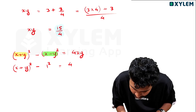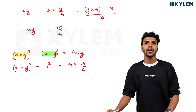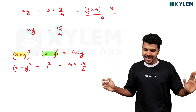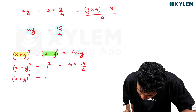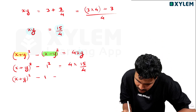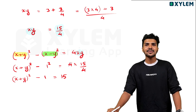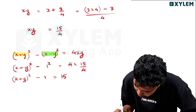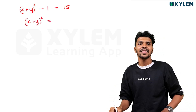xy is 15 by 4. So x plus y whole square minus 1 is equal to 4 into 15 by 4, which equals 15. Therefore x plus y whole square equals 15 plus 1, which is 16.